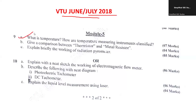The first question is: what is temperature? Give the definition of temperature. What are the temperature measuring instruments? You need to cover the classification of temperature measurement instruments — for example, thermometer, thermocouple, etc. You need to explain briefly. This carries 7 marks.